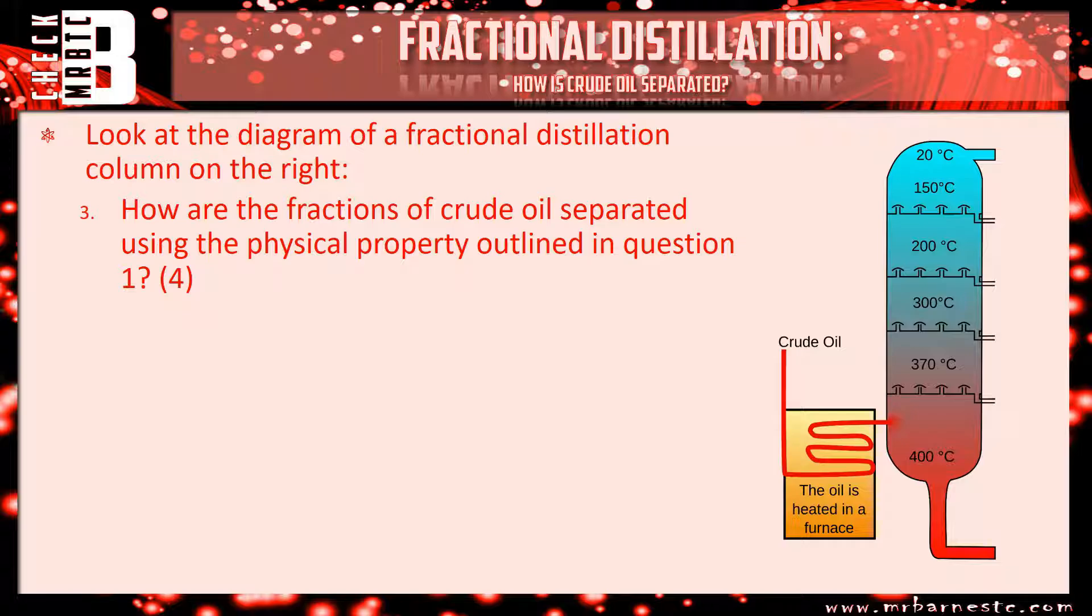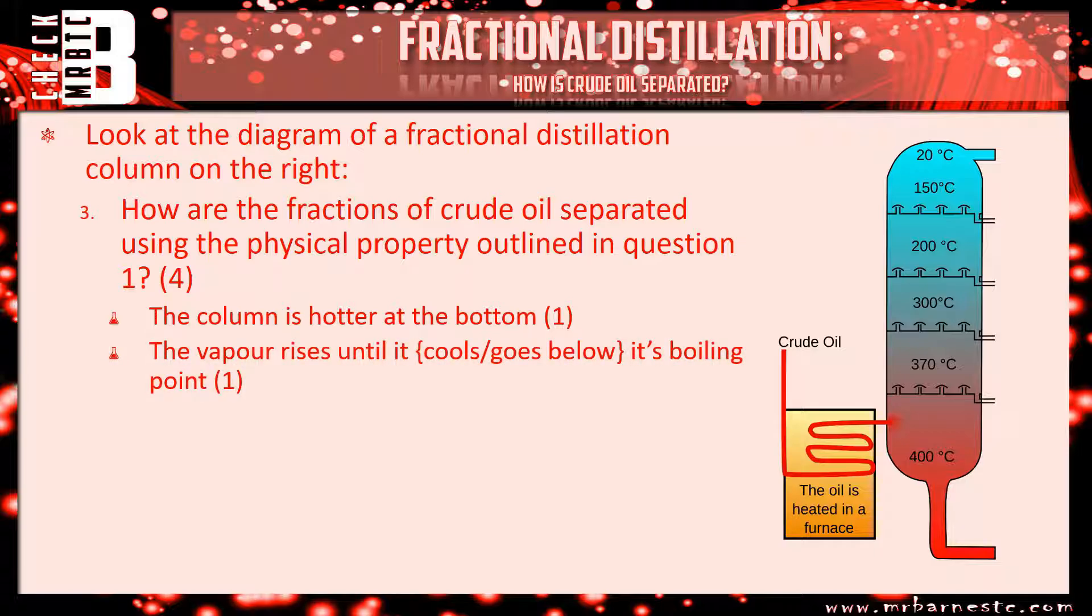Question three, how are the fractions of crude oil separated using the physical property outlined in question one? So in terms of boiling points. So the first thing is the column is hotter at the bottom, really important to remember that. The vapor is going to rise until it cools or goes below its boiling point, that's going to be your second mark.